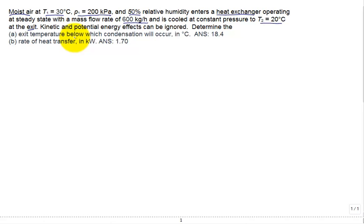Determine the exit temperature below which condensation will occur. And then the rate of heat transfer. So here's our heat exchanger. And we're coming in at state 1 and leaving at state 2.